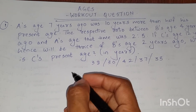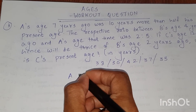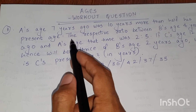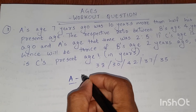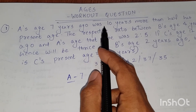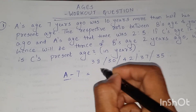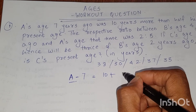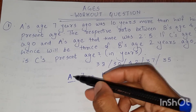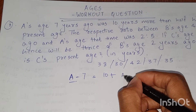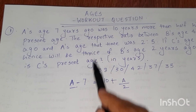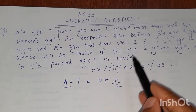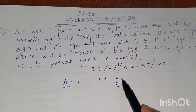Going to the first workout question. Let A's present age be A. Now it is given that A's age 7 years ago — 7 years ago means A minus 7. So A's age 7 years ago was 10 years more than half his present age. Half his present age means A by 2. So A minus 7 is equal to 10 plus A by 2.